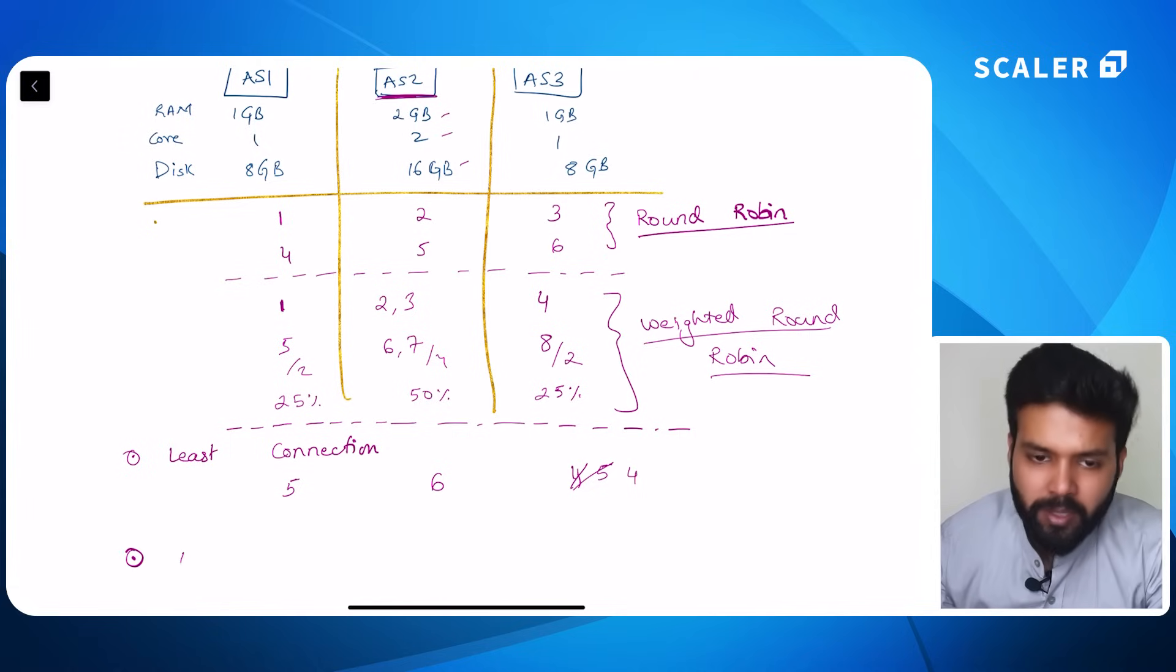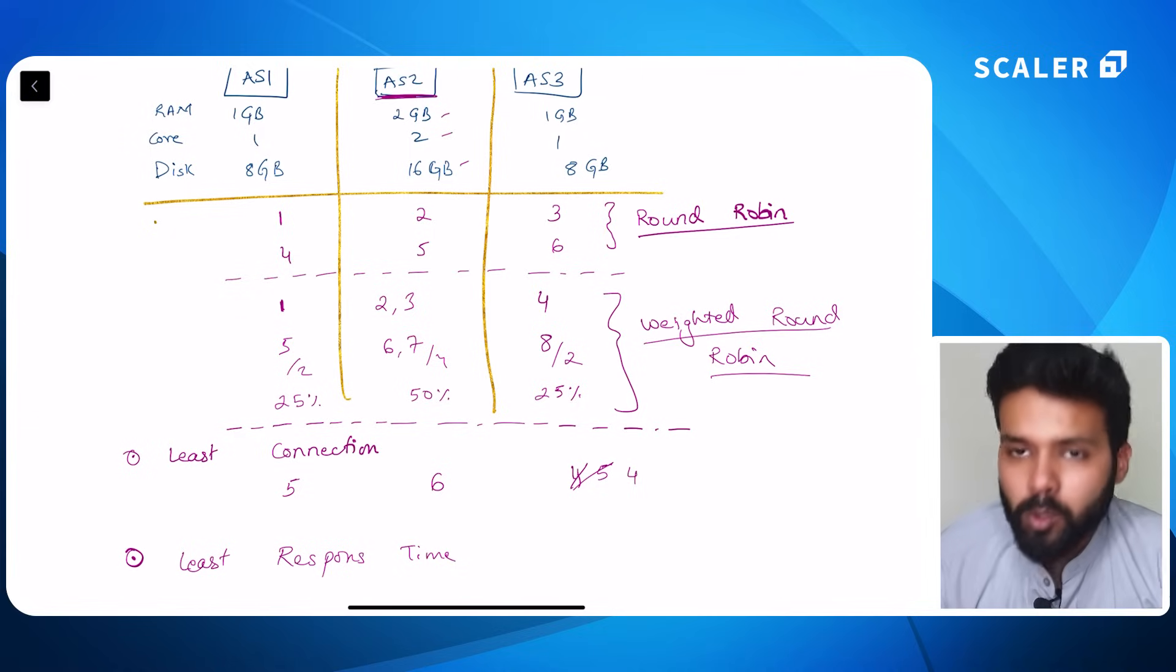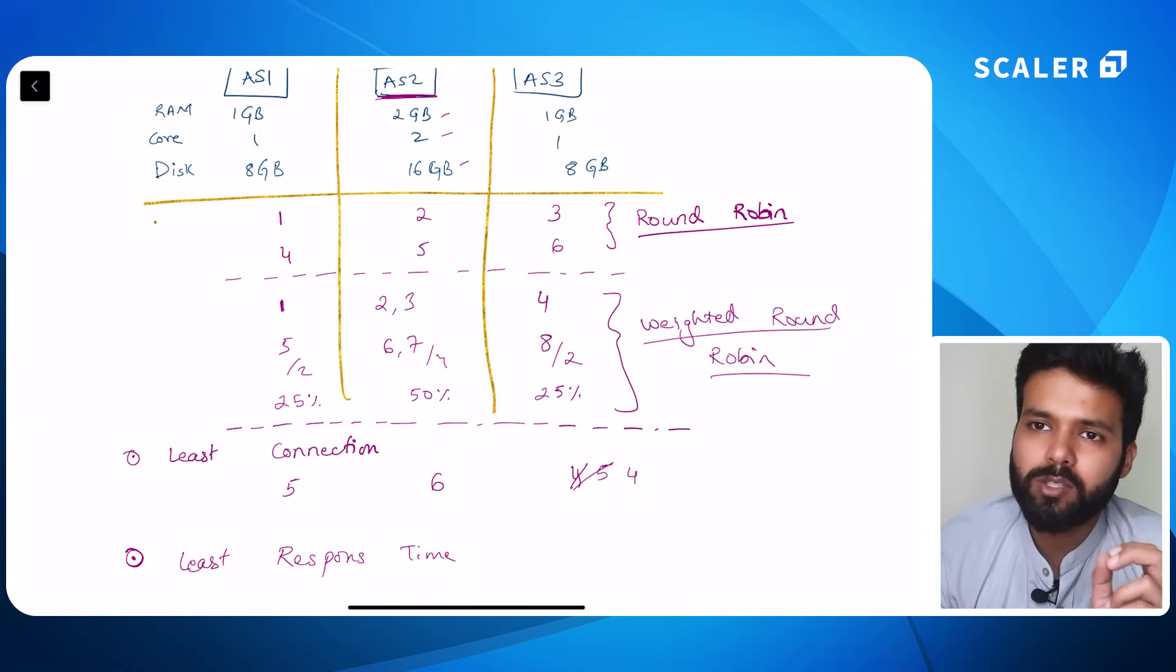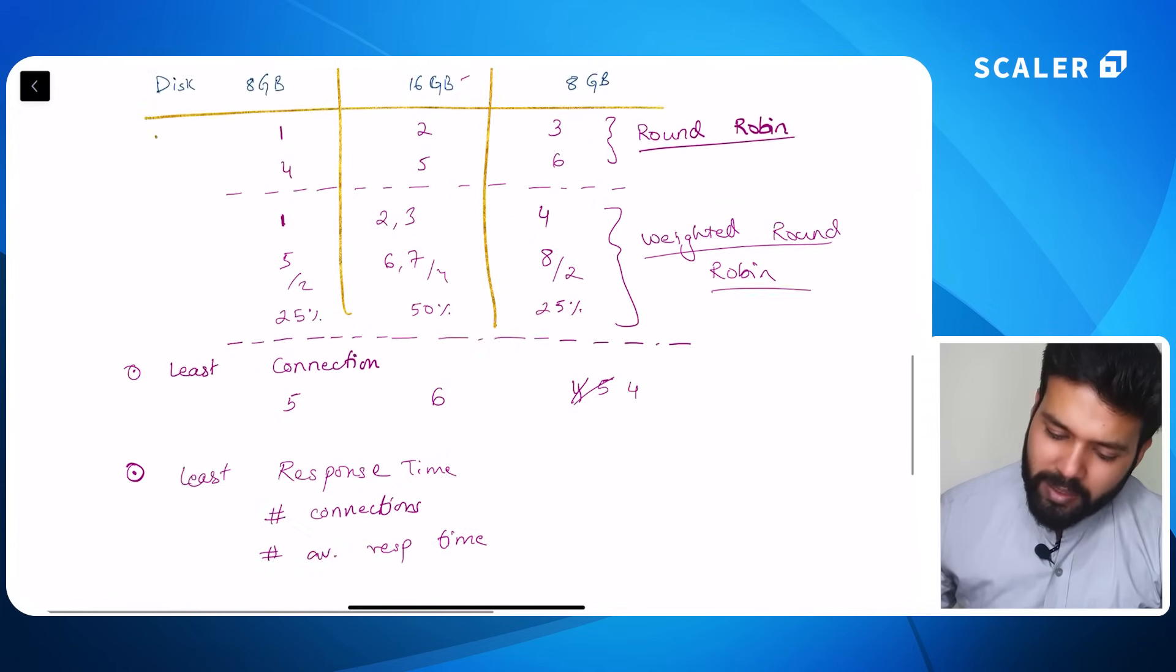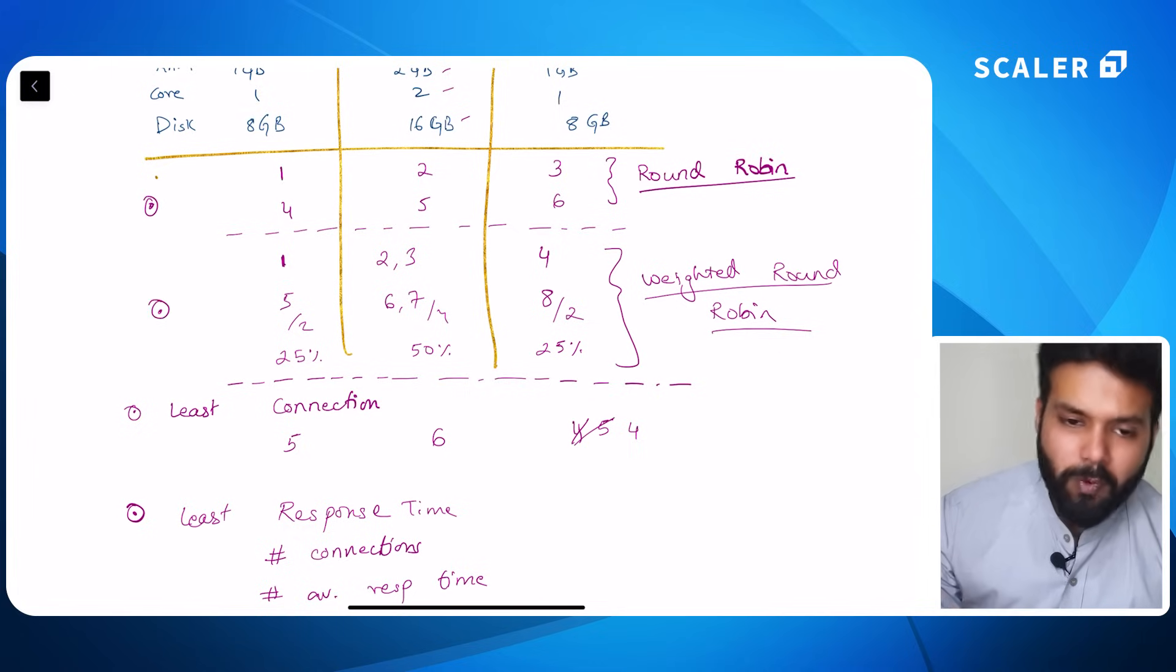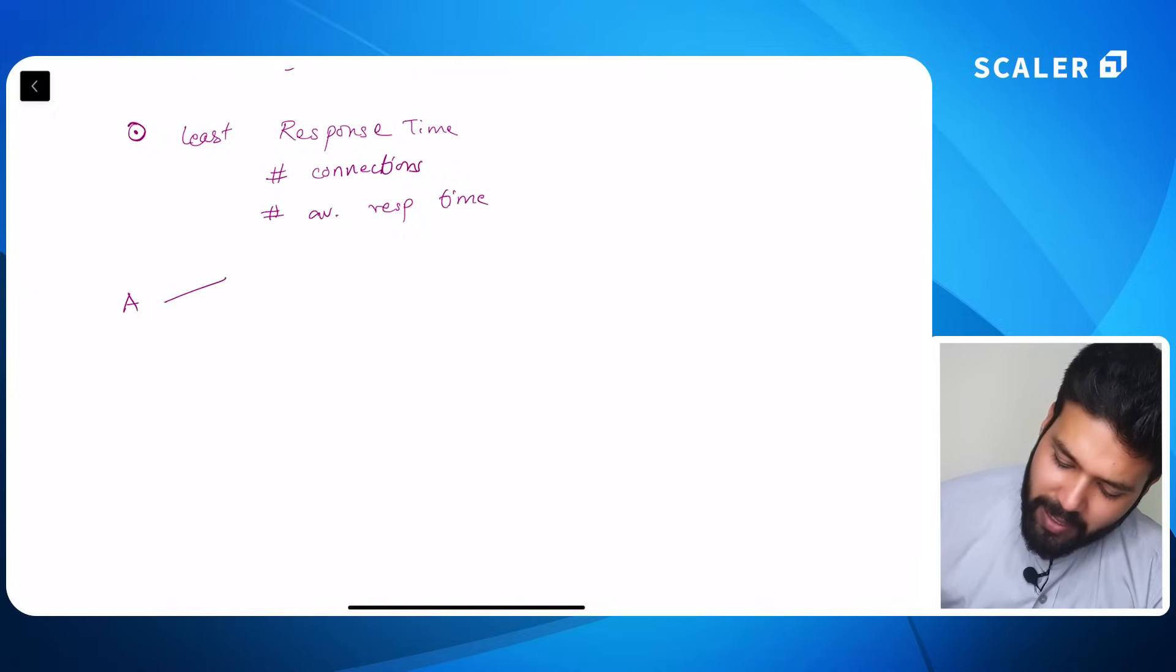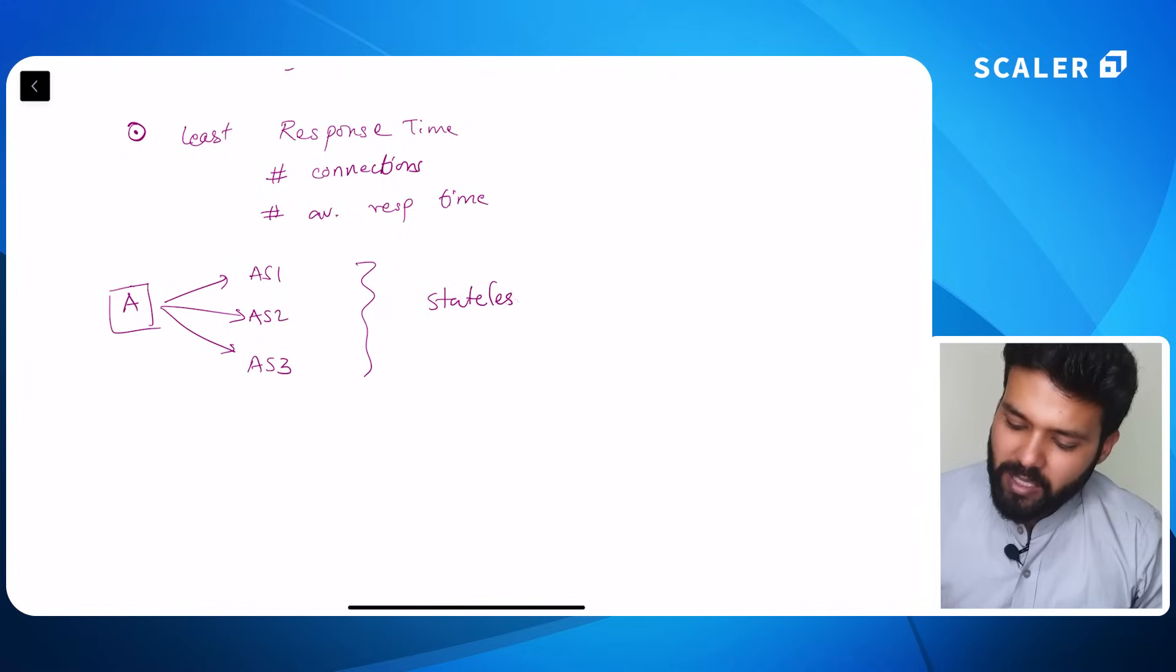The last strategy that I am going to talk about is basically a least response time strategy. In least response time strategy we look at two parameters. One is the number of connections it has and the second is the average time it takes to complete a particular request. Considering these two parameters we decide which server should cater to my next incoming request. Now all these strategies that we have covered till now work well if every app server is equally well equipped to answer my query. Meaning that if I have a query A I will get the same response if I send the query A to application server 1, to application server 2 or application server 3. Regardless of where this query is getting processed I will get the same response. This kind of a system is basically called a stateless system.